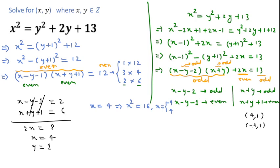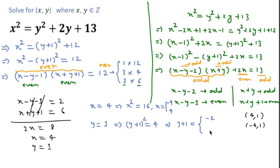We can also conclude about y. Since y equals 1, if we add 1 to both sides we get y plus 1 equals 2, and squaring gives (y + 1) squared equals 4. This means y plus 1 equals plus 2 or minus 2, corresponding to y equals 1 or y equals minus 3.